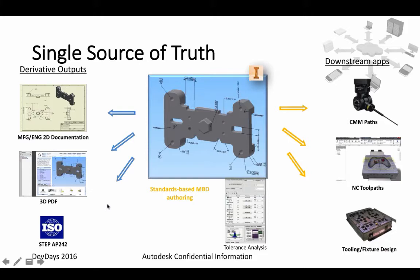The annotations can also be used in downstream apps — in a CMM path, an NC tool path, or tooling fixture design. Regarding design versus manufacturing dimensions: on the left side there's implicit promotion of feature dimensions added in the 3D model, and on the right side there's explicit promotion of feature dimensions to general annotation, which is available to you.